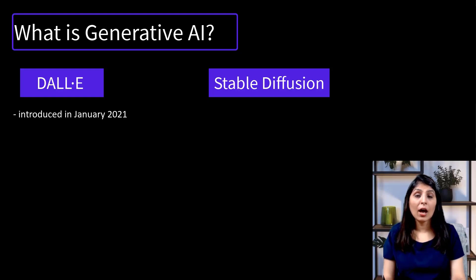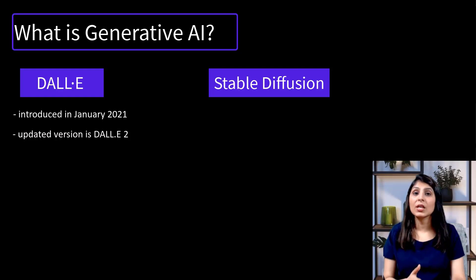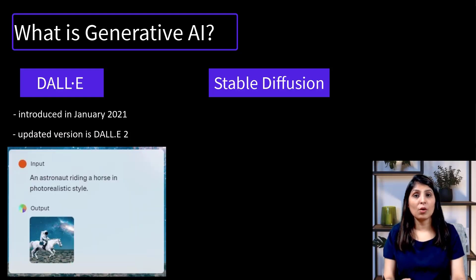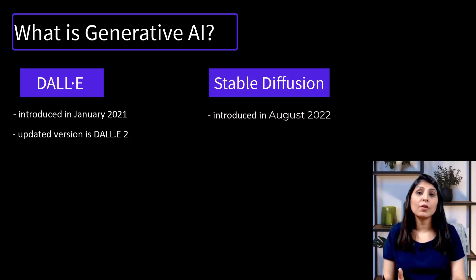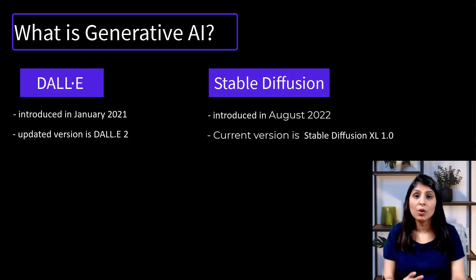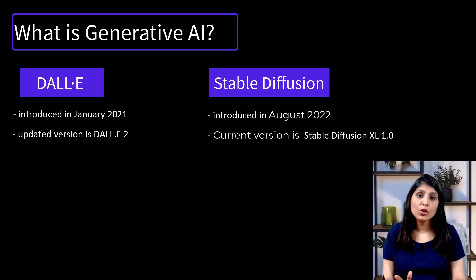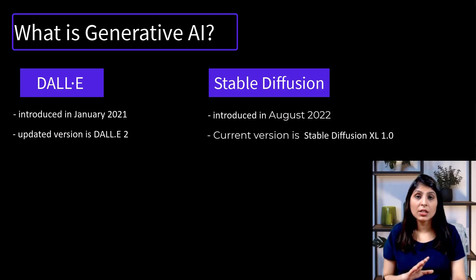The DALL-E model was introduced in January 2021, and now we have DALL-E 2, which is an updated version — using DALL-E 2 we can create images from text prompts. Another example is Stable Diffusion, which was introduced in August 2022. The current version is Stable Diffusion XL 1.0, and it can also make images guided by text prompts. You can use Stable Diffusion models on your local computers to generate images.